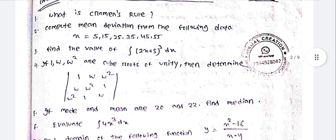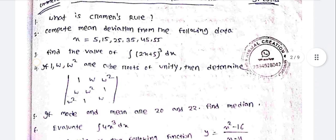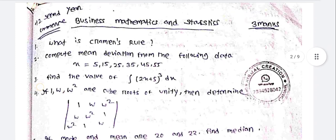Compute mean deviation from the following data: x equal to 5, 15, 25, 35, 45, and 55. Then find the value of the integration of 2x plus 5 dx.